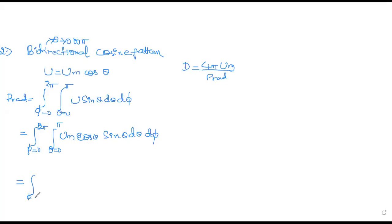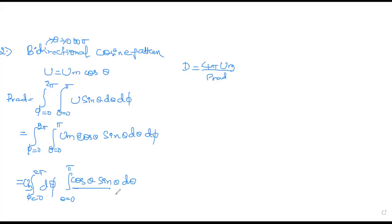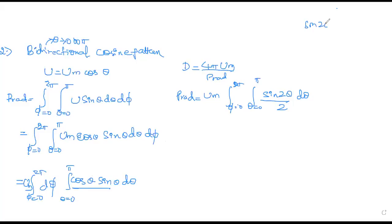Now relate the phi and theta terms. Take Um outside. You have cosθ·sinθ·dθ. Substituting sin2θ, power radiated = Um · ∫₀^(2π)dφ · ∫₀^π (sin2θ/2)·dθ, because sin2θ = cosθ·sinθ, and writing cosθ·sinθ as sin2θ/2.